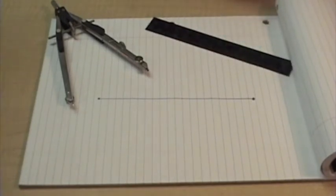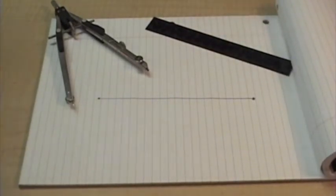Here's a line segment drawn from one point to another. How do we bisect it, which means how do we find out exactly where the middle of it is?